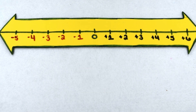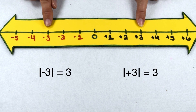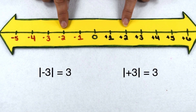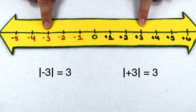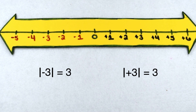All numbers and their opposites are going to have the same absolute value. Positive three and negative three are both located three places from zero, so both positive three and negative three are going to have an absolute value of three.